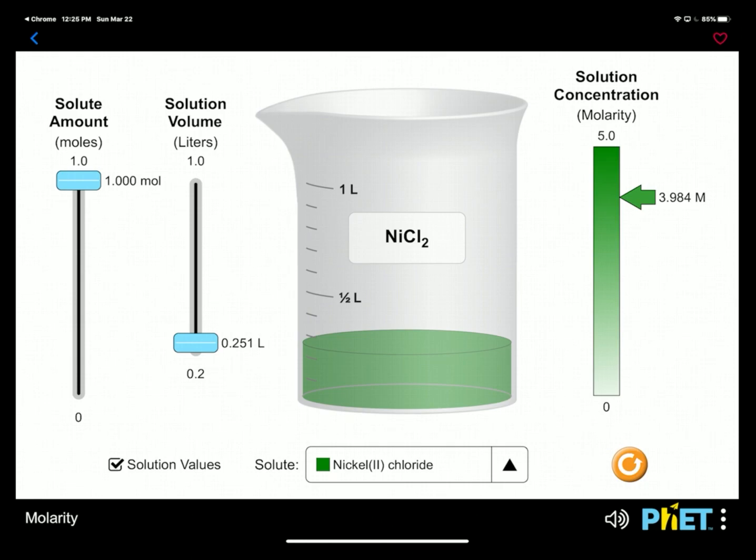All right, so again, concepts and words we need before we just go jumping into the math. If you're going to make a solution, you're going to have a solute—here that's nickel chloride—you're going to have a solvent, for us that is normally water. So the solute is whatever you're dissolving in the solvent. The solution is the combination of those two. The concentration is a measure of how much solute per unit volume of the solution, and the unit we are going to use the most is molarity, which is moles per liter. So next step is we're going to be jumping into that math.